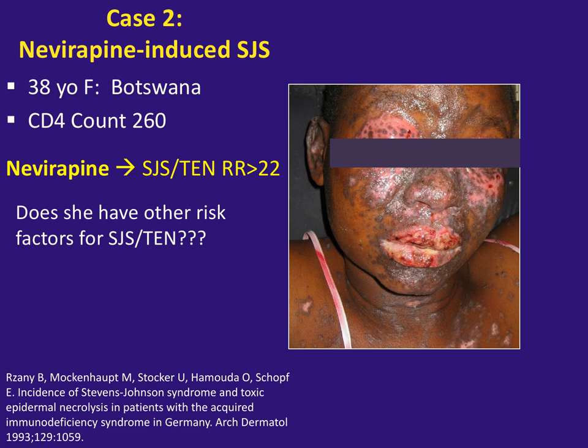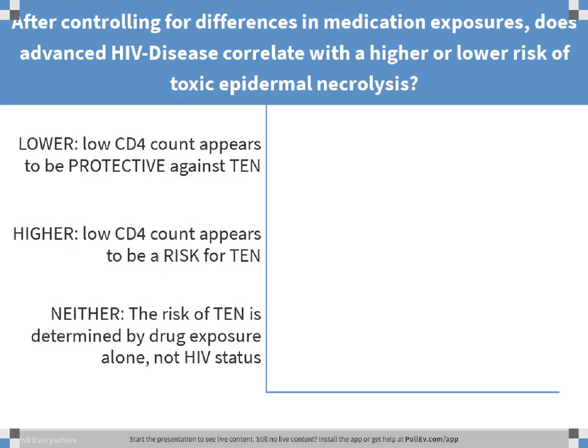Now, we don't use nevirapine very much today, so why include it? Does she have any other risk factors for SJS and TEN besides nevirapine exposure? Specifically, after controlling for medication exposures, does advanced HIV disease correlate with a higher or lower risk of TEN? Is a low CD4 count protective because you can't make TEN as easily, or is it a risk factor? Actually, the risk of TEN is not determined by drug exposure alone.